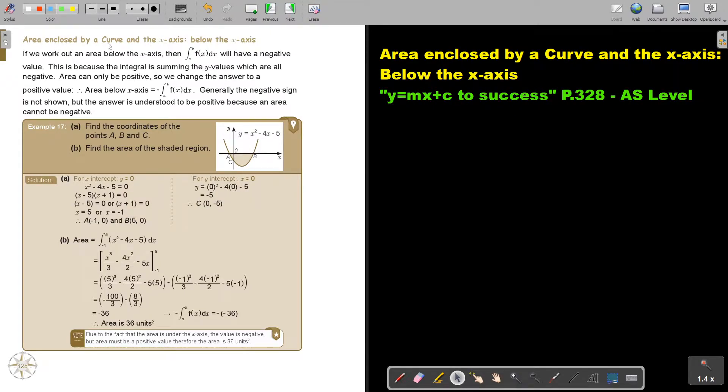Area enclosed by a curve and the x-axis below the x-axis. If we work out an area below the x-axis then this will have a negative value. This is because the integral is summing the Y values which are all negative. Area can only be positive so we change the answer to a positive value.